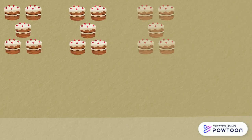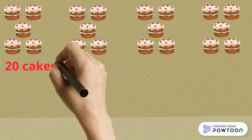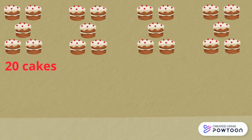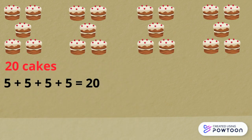Let's do one together. You can check your answers as you go. How many cakes can you see all together? There are 20 cakes. What is your addition sum going to look like? It would say 5 plus 5 plus 5 plus 5 equals 20.